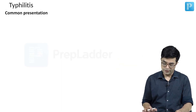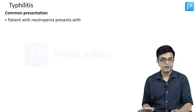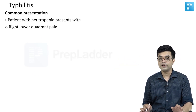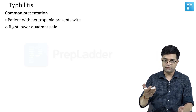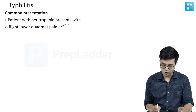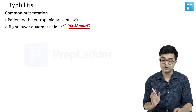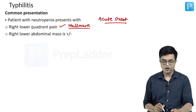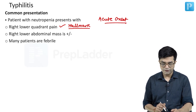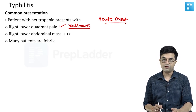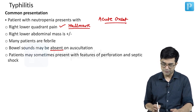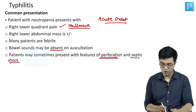What is the common presentation? There will be a patient with neutropenia who will present with sudden onset, acute onset, right lower quadrant pain. On examination, tenderness will be present — that is the hallmark of these patients. The clinical hallmark is acute onset right lower quadrant pain. There may or may not be a right lower abdominal mass. Many patients are febrile and the bowel sounds may be absent on auscultation. Patients may sometimes present with features of perforation and septic shock as well.